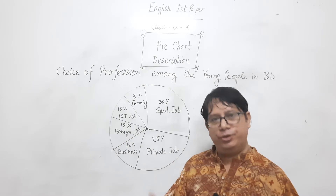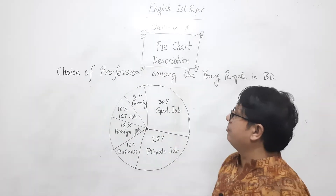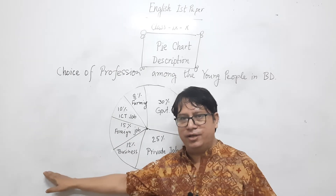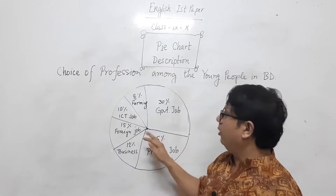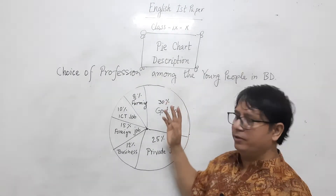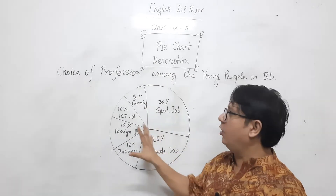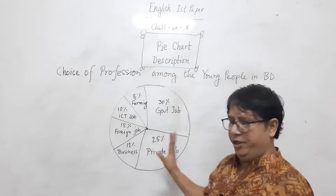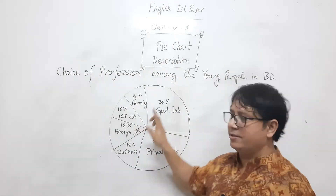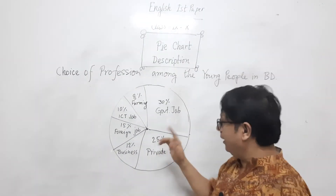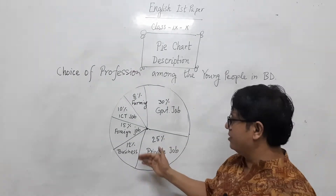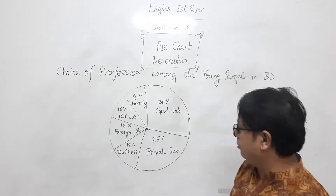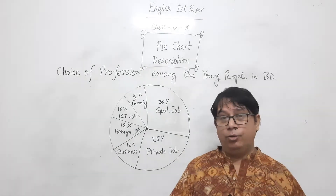In the introduction, start with a sentence like: 'This is a pie chart of the choice of profession among young people of our country.' Then mention that the pie chart shows six sections: government job, private job, business, foreign job, ICT job, and farming. This gives the general description of the chart.